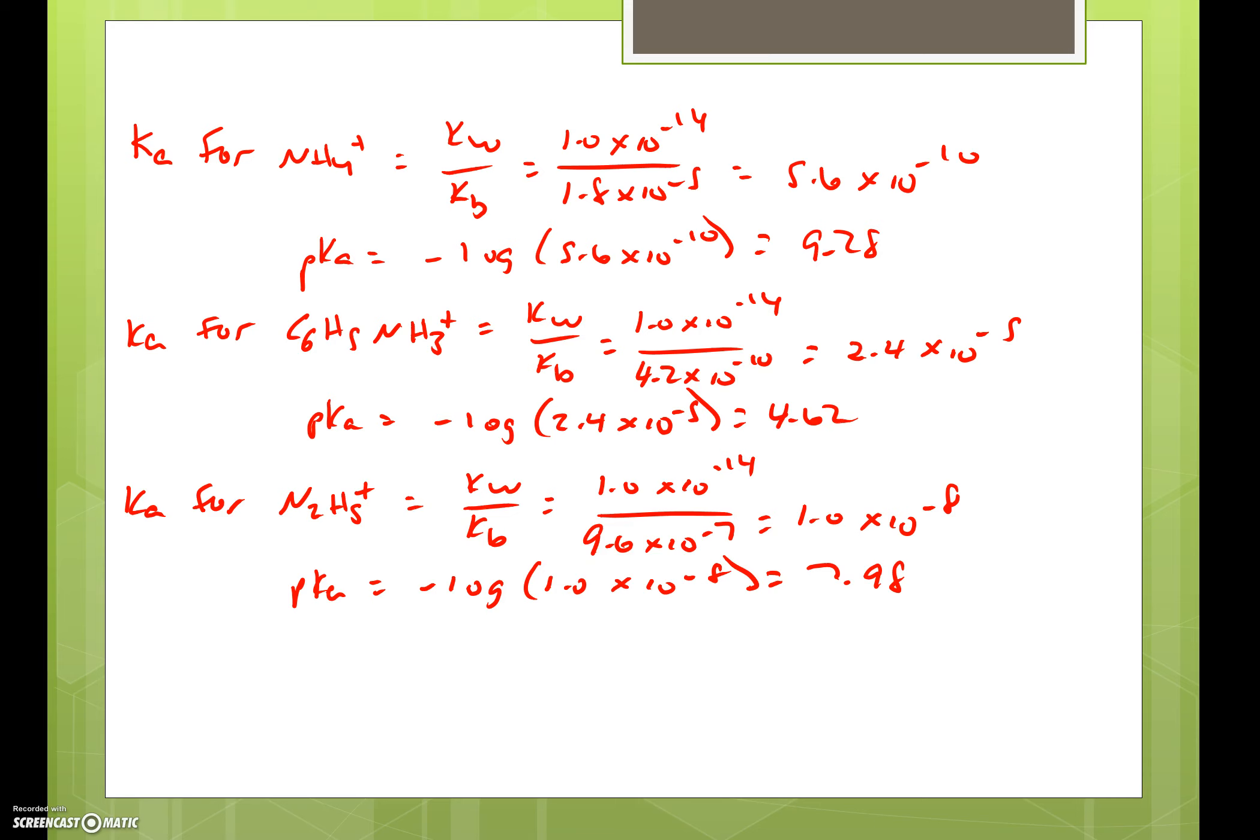The Ka for ammonia, ammonium ion, would be 1.0 times 10 to the minus 14 divided by the Kb for ammonia, and that's going to give us 5.6 times 10 to the minus 10. If we take the negative log of that value, that will give us the pKa. So the pKa for ammonium is 9.28.